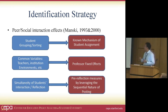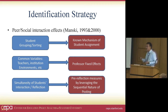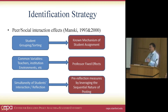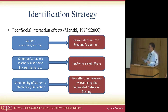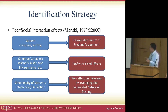To identify peer effects, there are three challenges. First, student sorting — but because we know the mechanism of student assignment, we can overcome selection bias by controlling the order of registration. Second, common variable bias — in this scenario, the only difference among classrooms is the teacher, so we control for professor fixed effects. The last and probably most challenging is the reflection problem: the simultaneity of students' interaction. Because we have nice longitudinal data about the posts, we are able to create measures of student innate ability using the sequential nature of posting and a dynamic panel model.